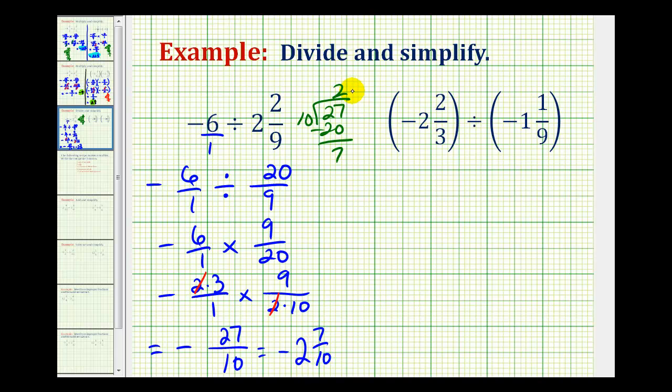Let's take a look at a second example. The first step is to convert these to improper fractions. It's a negative fraction. The denominator is three. The numerator would be three times two plus two, which is eight, divided by. The second fraction is negative, with a denominator of nine, and the numerator would be nine times one, plus one, which is 10.